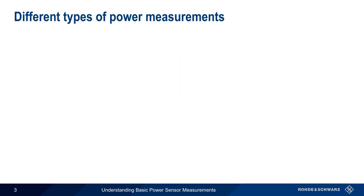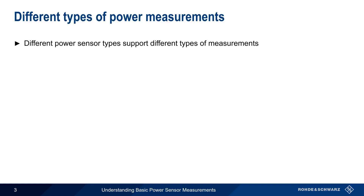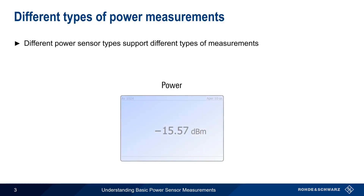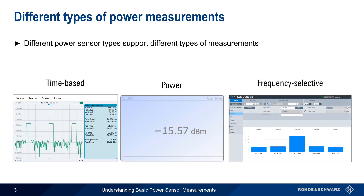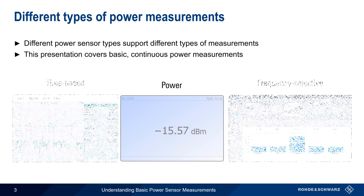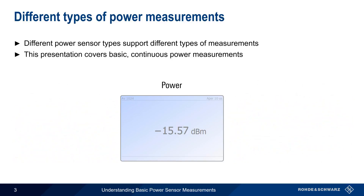Power sensors can also be grouped another way — namely, what kinds of measurements can be made with them. All power sensors can measure pure power, that is, power equals x dBm or x watts. But, depending on the sensor type, one can also make time-based power measurements, such as the parameters of a pulse signal's envelope, or even frequency-selective power measurements, like ACLR. However, in this presentation we'll cover only the basic continuous power measurements that can be made with any type of power sensor.